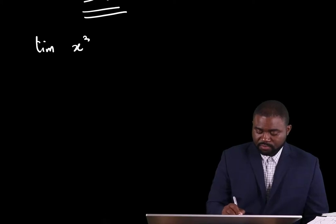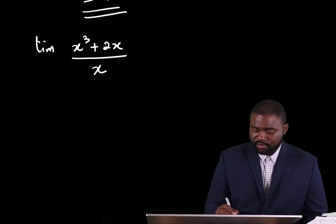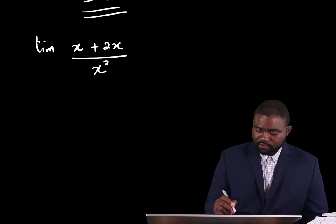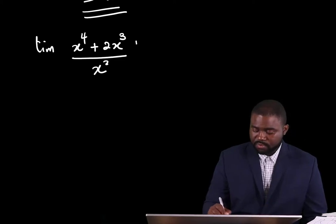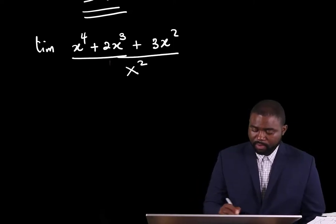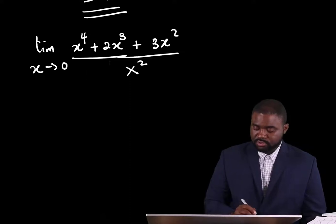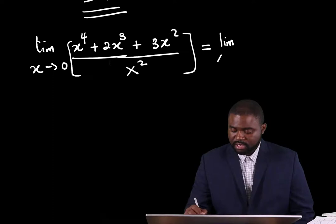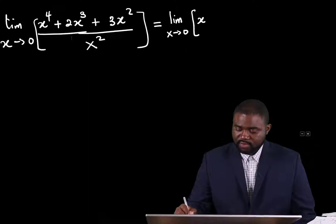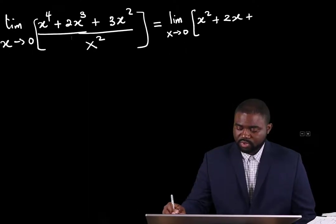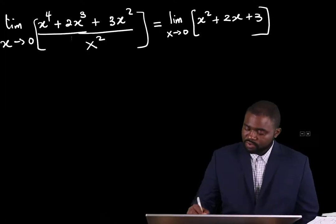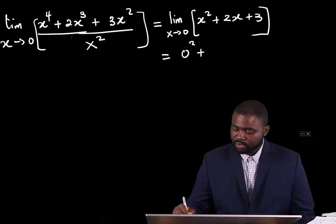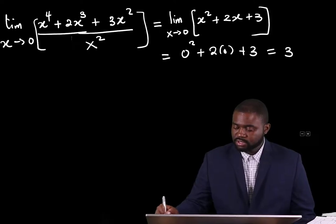Another example would be the limit of x cubed plus 2x plus 3x squared, all divided by x squared, as x approaches 0. If we simplify, this is going to be equal to the limit as x approaches 0 of x squared plus 2x plus 3. Which will be equal to 0 squared plus 2 multiplied by 0 plus 3, and our answer is equal to 3.